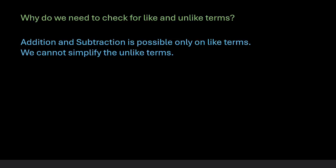Now the question is why do we need to check for like and unlike terms. Basically, the operations of addition and subtraction are possible only on like terms. We cannot simplify the unlike terms and therefore we collect the like terms together and perform operations on them.